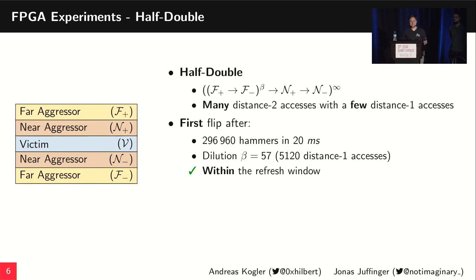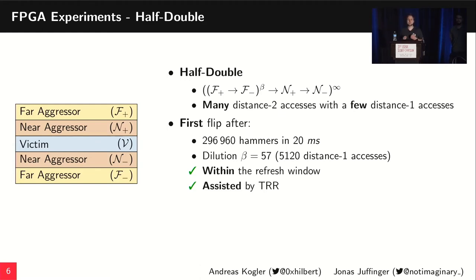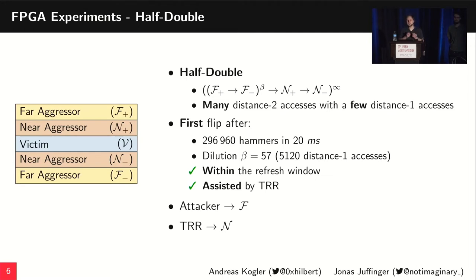We can see that 20 milliseconds fits into the refresh interval of modern RAM. However, as mentioned in the beginning, we used this distance-2 hammering pattern on commodity devices without performing any accesses to the near aggressors. So where do those near aggressor accesses come from? The TRR mitigation itself provides them: since we are hammering the far aggressors, after a certain activation count is reached, TRR tries to protect the neighboring rows and issues refreshes to those neighbors. These refreshes are similar to accesses and transport the Rowhammer effect to the victim V, causing bit flips.